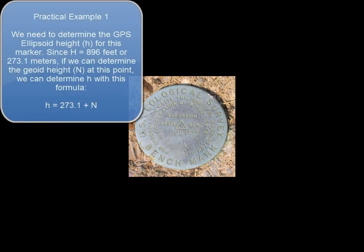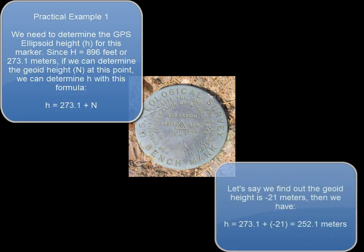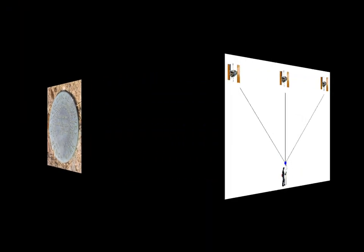As a practical example, let's say we need the WGS84 ellipsoid height for a marker with an MSL height of 896 feet or 273.1 meters. If the geoid height at this point is minus 21 meters, then the ellipsoid height is 252.1 meters.